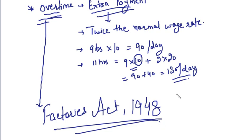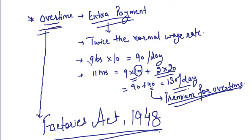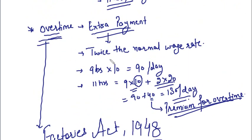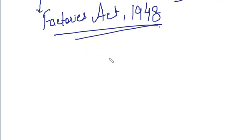The 40 rupees earned from overtime (2 hours × 20 rupees) is known as the premium for overtime — meaning the reward for doing overtime. Now, one concern: if every worker who does overtime gets twice the normal wage rate, a worker might think — why work during normal time? Let me sit idle and then do overtime, so I get normal wages plus double overtime pay.